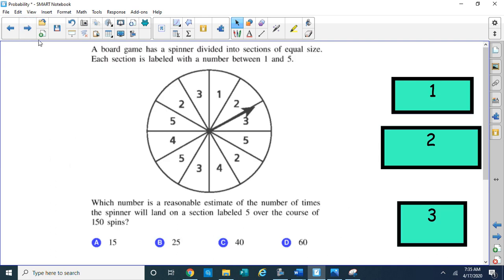So a board game has a spinner divided into sections of equal size. Each section is labeled with a number between 1 and 5. So you got 1 and 5. So I notice you got a lot of numbers here and a lot of sections that are equal. And I'm looking at it briefly. I notice some of the numbers are repeating. So that's interesting. What are they asking for? Which number is a reasonable estimate? When I see that word estimate, I underline it, which means I don't have to be exact. So I can be somewhere in the ballpark. So that's good to know. Which number is a reasonable estimate of the number of times the spinner will land on a section labeled 5 over the course of 150 spins?